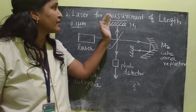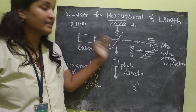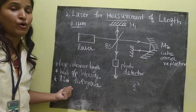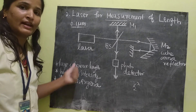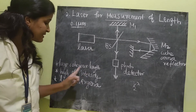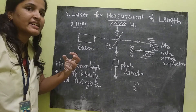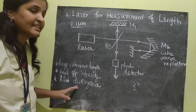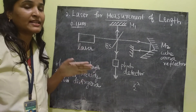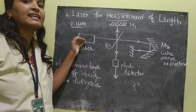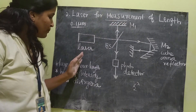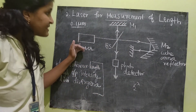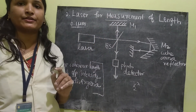In this technique, laser is used because of three reasons. First, laser has a large coherence length. Second, the output intensity is very high. Third, the divergence is very low, meaning the beam coming out of the laser device is almost parallel. Because of these three properties, laser is used in this application.